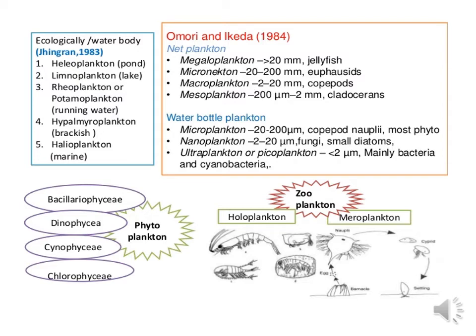Bacillariophyceae, also called diatoms, is a unicellular algae that may be colonial or filamentous. Dinophyceae belong to the class dinoflagellates and are also called benthic dinoflagellates, found in sediments. Cyanophyceae are free-living photosynthetic bacteria. Chlorophyceae include green algae. Ecologically, water bodies have different zonations and each zone has different types of planktons. Ponds have haloplanktons, lakes have limnoplanktons, rheoplanktons are found in running water, hypomyroplanktons are found in brackish water, and helioplanktons are present in marine environments.